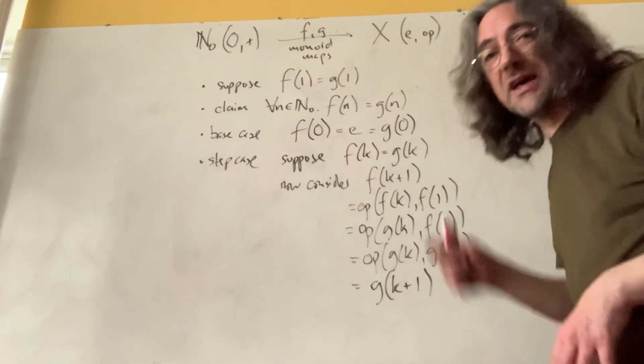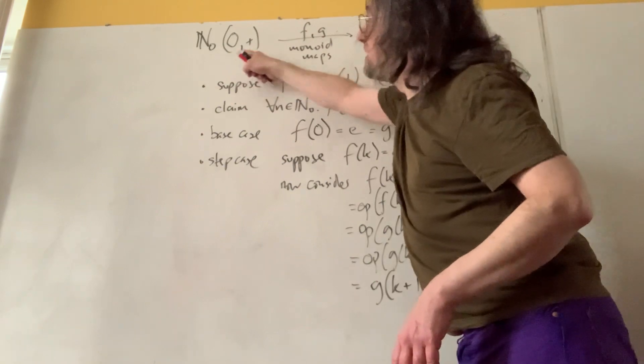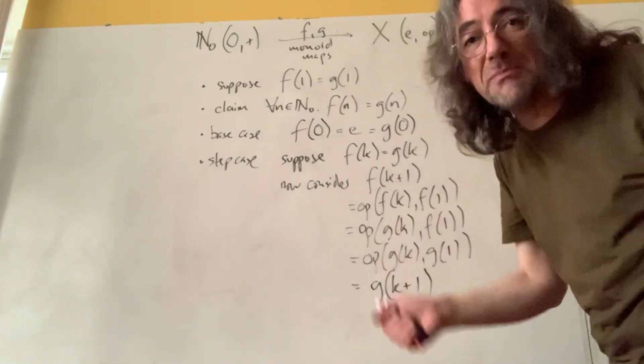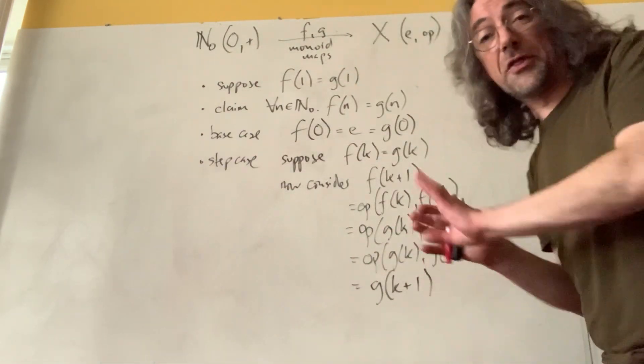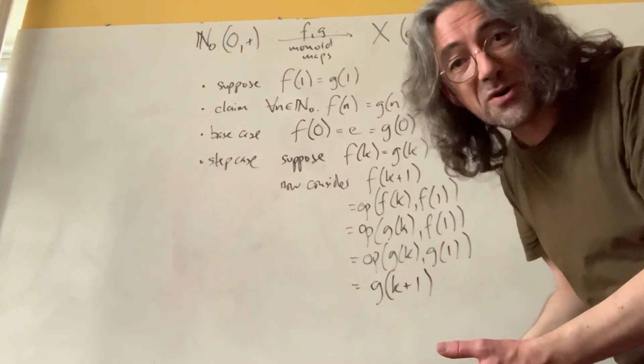Every function that is a monoid map out of the natural numbers with 0 and plus can be made according to that recipe. Other implementations are possible, but other functions are not possible.